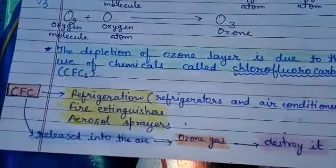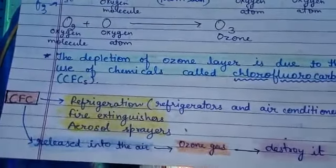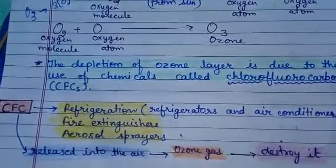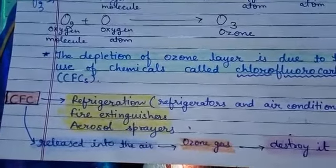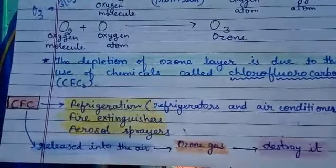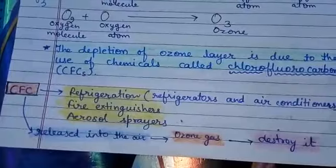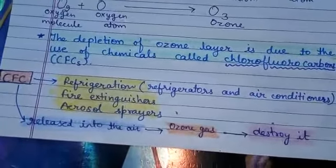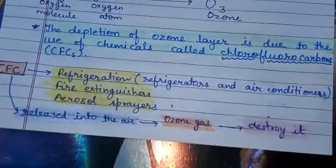If the ozone layer in the atmosphere were to disappear completely, the most harmful ultraviolet rays from the sun would reach the Earth, and life on Earth would be destroyed gradually.